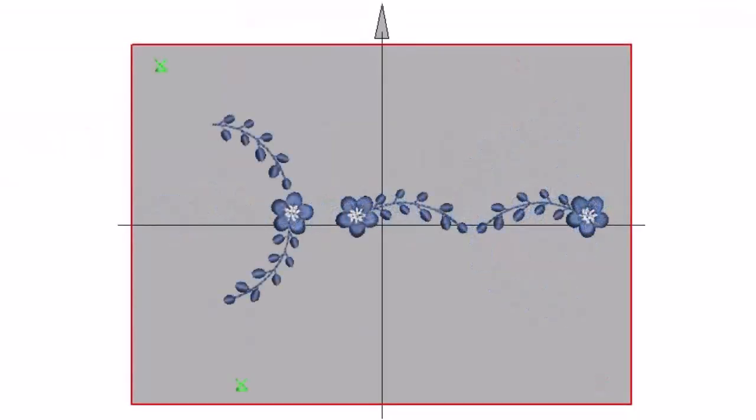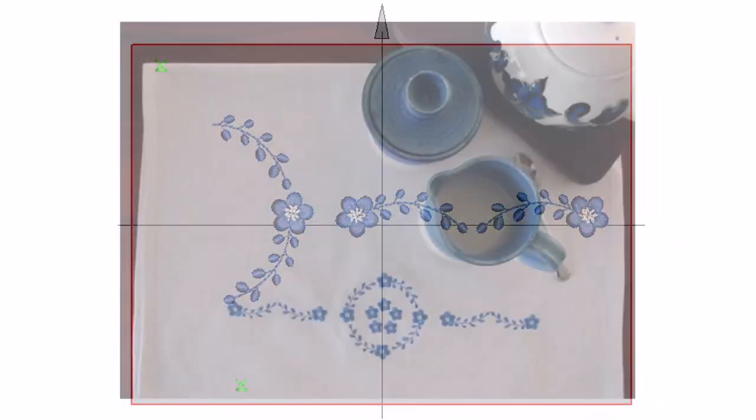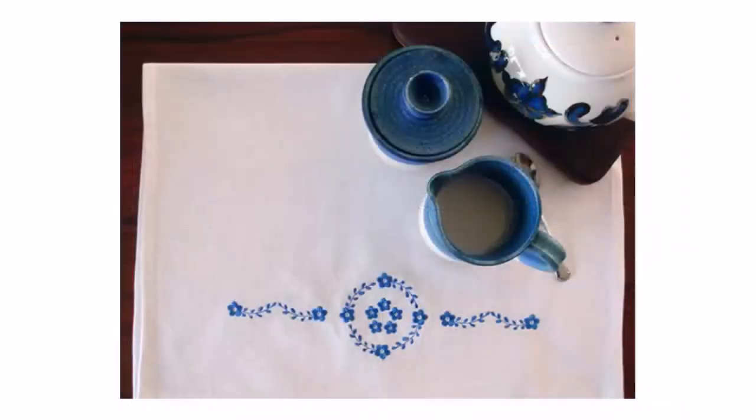Each hooping can be transferred to machine folder or saved as a machine file. In this video we take a French linen kitchen towel project and stitch it out in two hoopings.